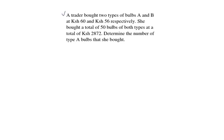Question number 15. A trader bought two types of bulbs, type A and B.